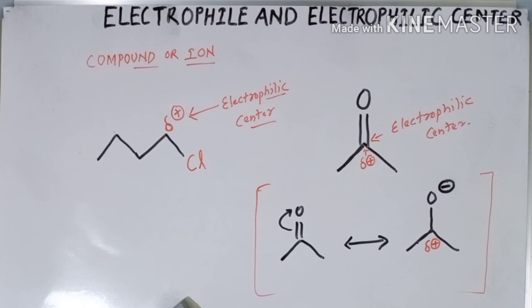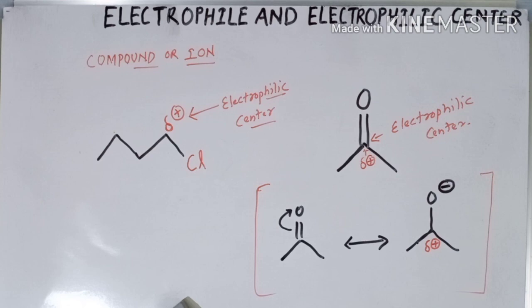With these two examples, we can understand that compounds or ions which carry a positive charge are electrophiles, and the actual atom which carries or loses electron density becomes positively charged and is known as the electrophilic center. I hope you understand the concept. Thank you.